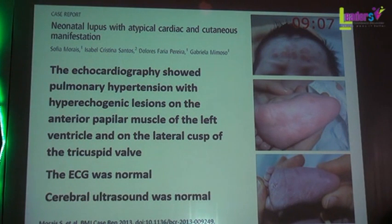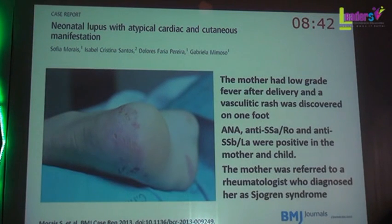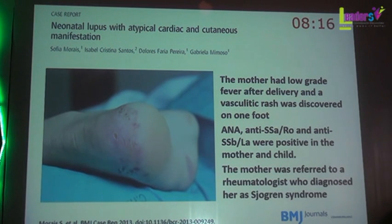In one case, neonatal lupus with atypical presentation included forehead erythematous lesions misdiagnosed as fungal infection, lesions on the sole of the foot, and hyperechogenic lesions on the anterior papillary muscle of the left ventricle and the lateral cusp of the tricuspid valve. The ECG was normal — no heart block — and cerebral ultrasound was normal. When neonatal lupus was suspected, anti-nuclear antibody and anti-SSA Ro and La were found positive in the mother, who had only one area of vasculitis in her foot.